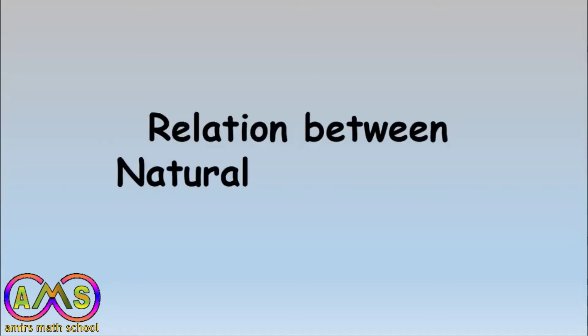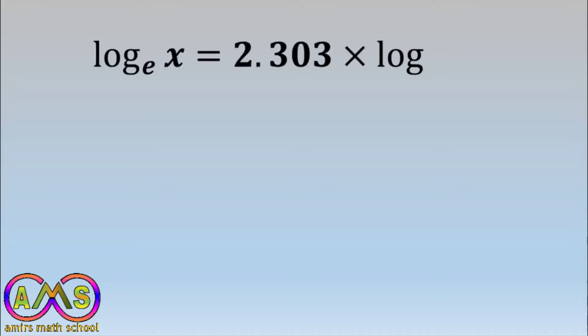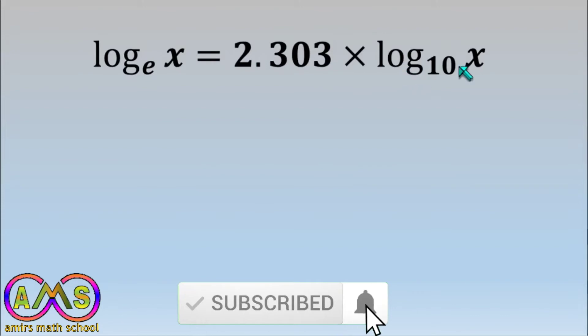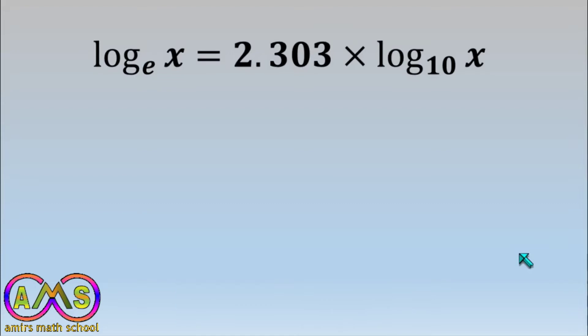Welcome to Amir Smith School. In this video we are going to learn about the relation between natural and common logarithm — specifically how we can relate the natural logarithm with the common logarithm. The relation is: log base e of x equals 2.303 times log base 10 of x, where log base e of x is the natural logarithm and log base 10 of x is the common logarithm.